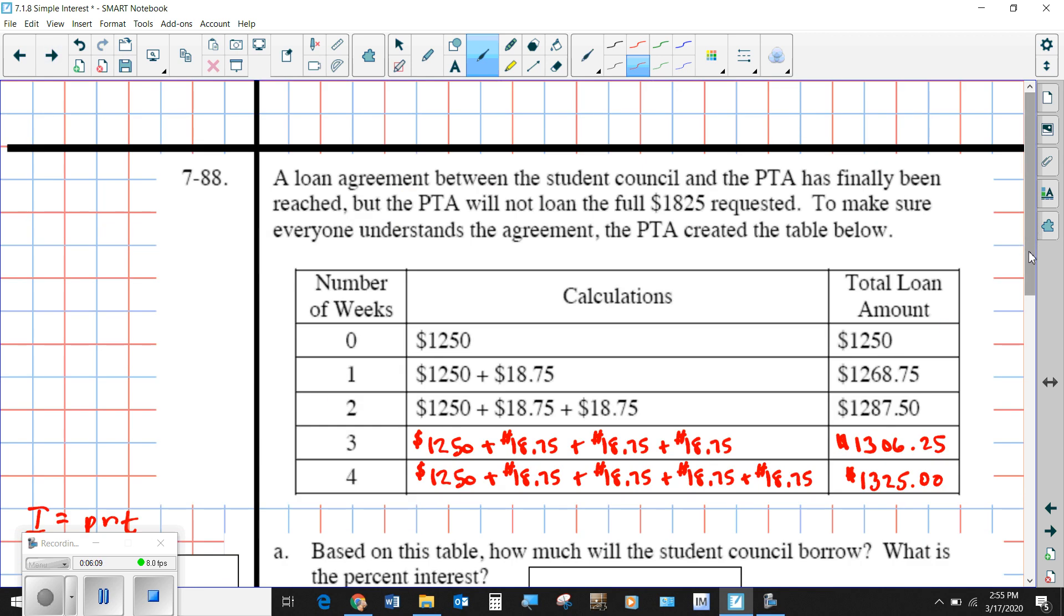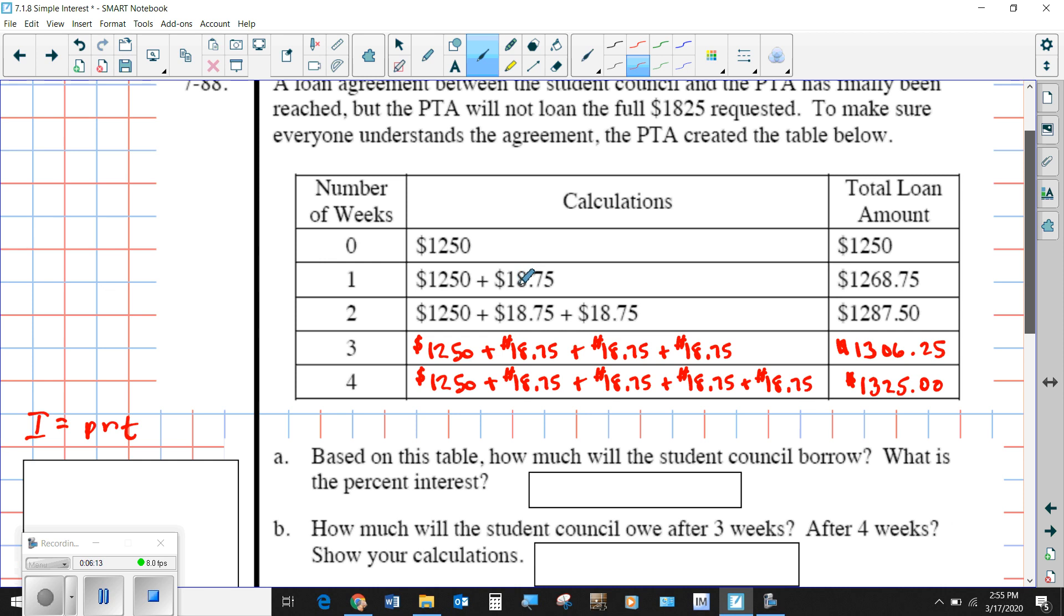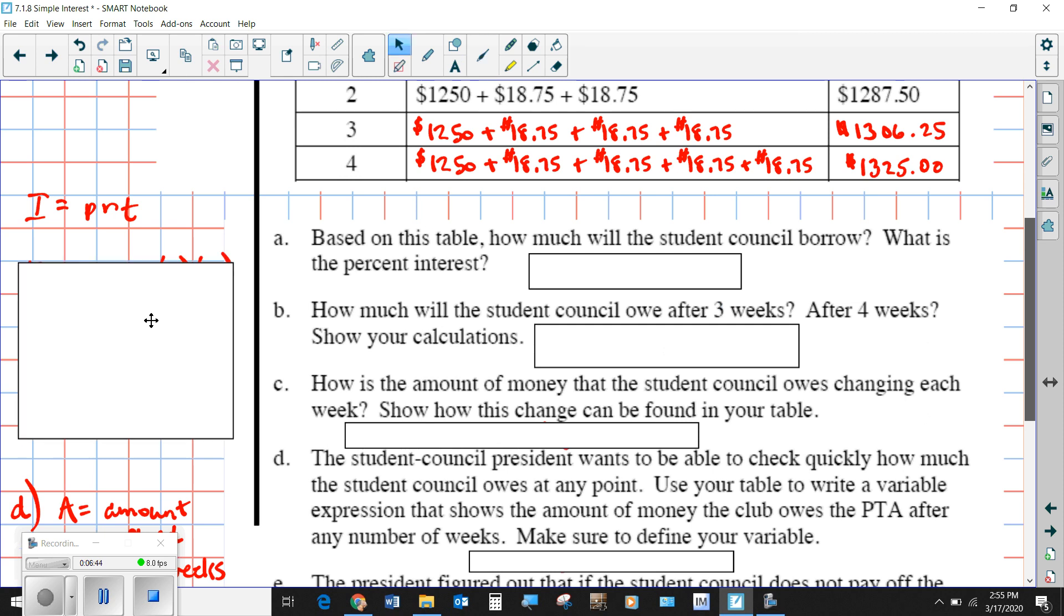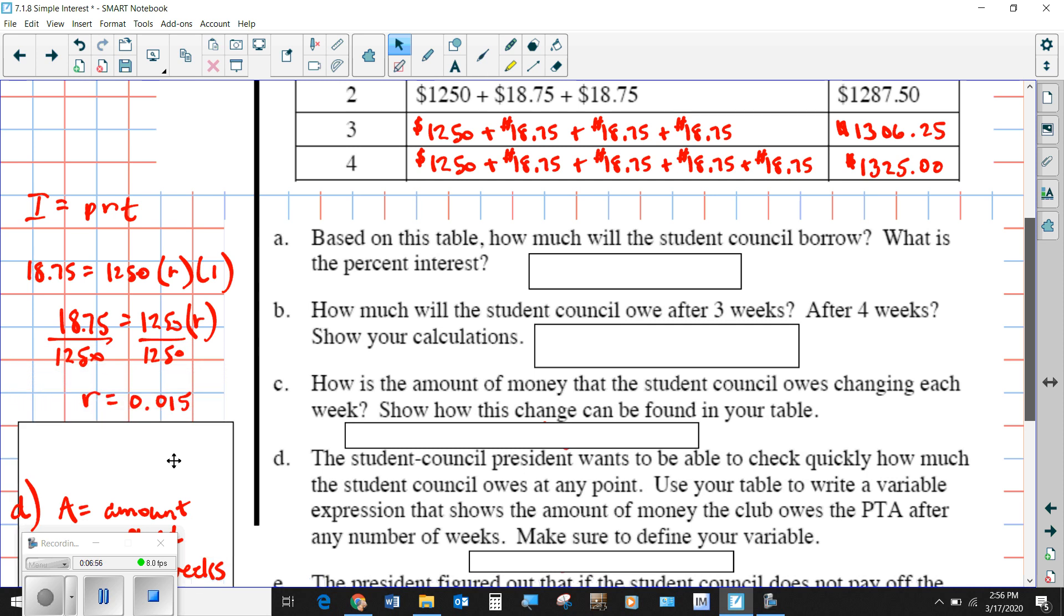This is kind of a table that shows you what's happening here. Every week you add on another dollar amount. In this case, this situation is $1,250, and the interest being charged per week is $18.75, so I'm guessing we're going to have to figure out what the interest rate is for this situation. One week you just add it once, two weeks you add it twice or multiply this times two, three weeks and four weeks. So based on this table, how much will the student council borrow and what is the interest rate? We know the $18.75 is the interest, and the principal was $1,250, and then for each week we're just going to have a one there. When we divide $18.75 by $1,250, we get $0.015, which is equivalent to 1.5%.